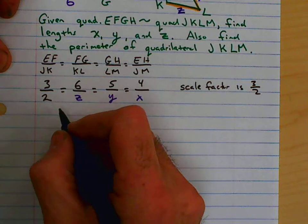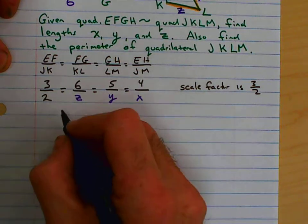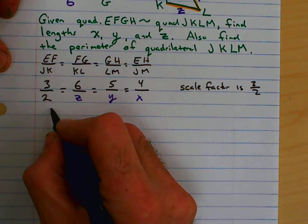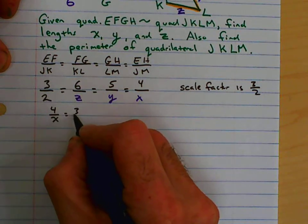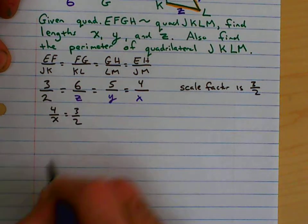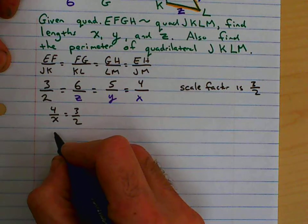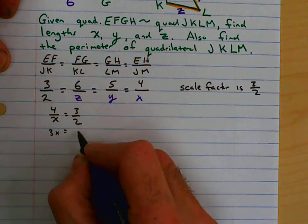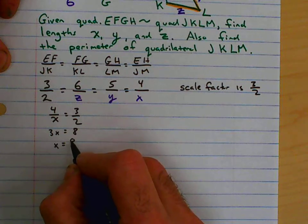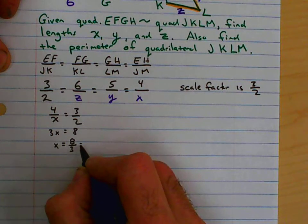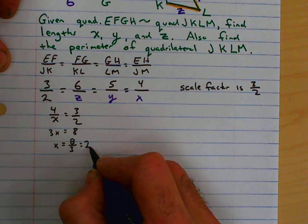So in this case, to find x, we're going to set 4 over x equals 3 over 2. Which when I cross multiply, I get 3x equals 8. So x equals 8 thirds, which is equal to 2 and 2 thirds.